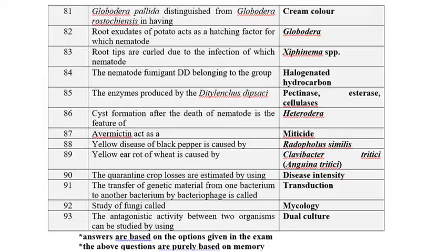Globodera pallida is distinguished from Globodera rostochiensis by having a cream color. Root exudates of potato act as a hatching factor for Globodera.